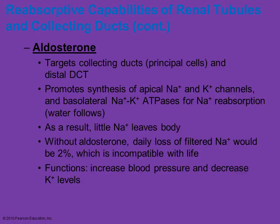Some of the hormones — if you remember from the endocrine system — include things such as aldosterone, which plays a huge role in the collecting ducts and the distal convoluted tubule. It tends to help with reabsorption of sodium and potassium, and water follows those. As you reabsorb that sodium, ultimately there should be very low sodium in the urine — most of what was initially filtered is reabsorbed back into the blood. So it plays a role in helping to regulate blood pressure and also decrease levels of potassium.